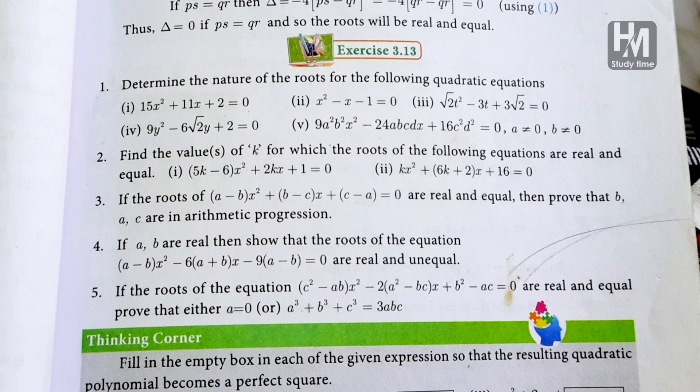So the first name is exercise 3.13. Third question: If the roots of (a - b)x² + (b - c)x + (c - a) = 0 are real and equal, then prove b, a, c are in arithmetic progression. And the fourth question: If a, b are real, then show that the roots of the equation are real and unequal.